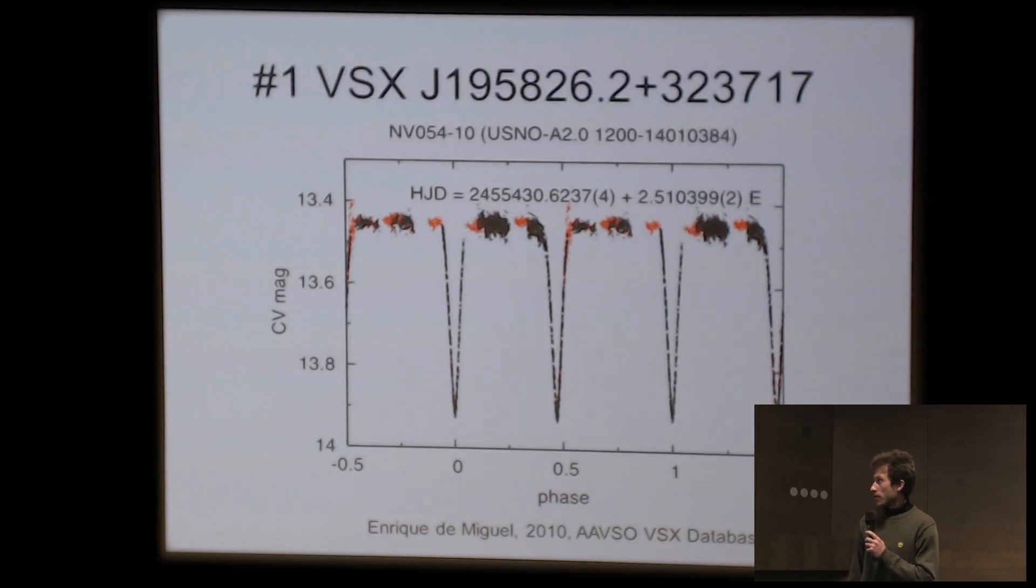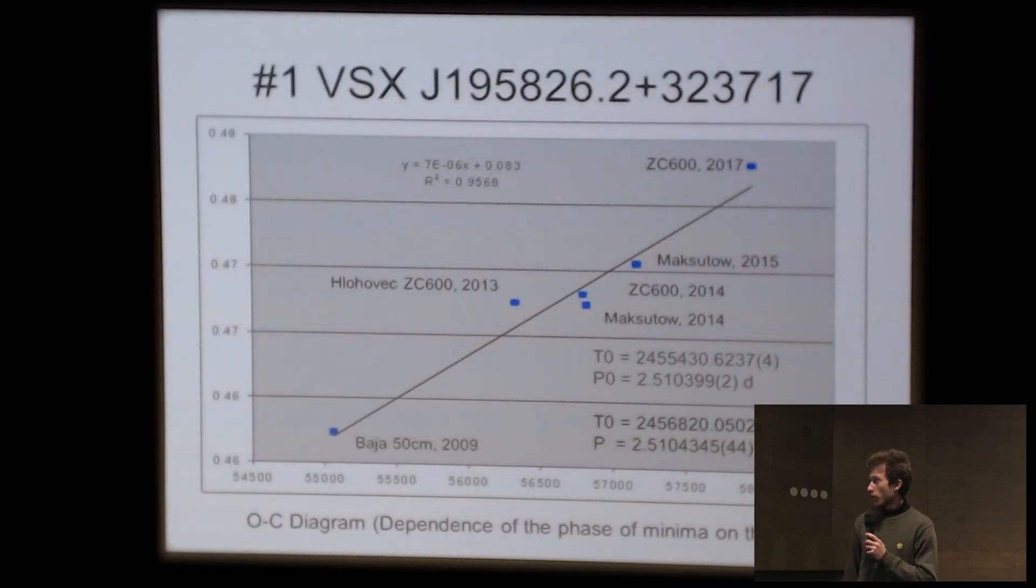This is the first object. I will not name these long numbers. This is the light curve from VSX. The period was determined by the discoverers.